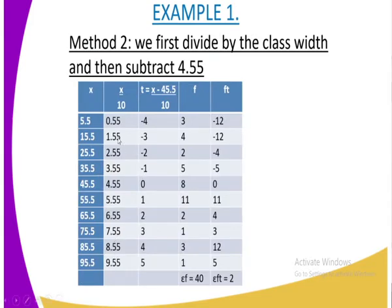Here, to make the values much smaller, I decided to divide them by 10 to ease my work. I divided my X by 10. For example, when I divided 5.5 by 10, I got 0.55, and so forth. 95.5 divided by 10 gives 9.55. I have my t here, where t is the value of X minus the assumed mean. Remember, we have an assumed mean of 45.5 divided by 10, which is 4.55.